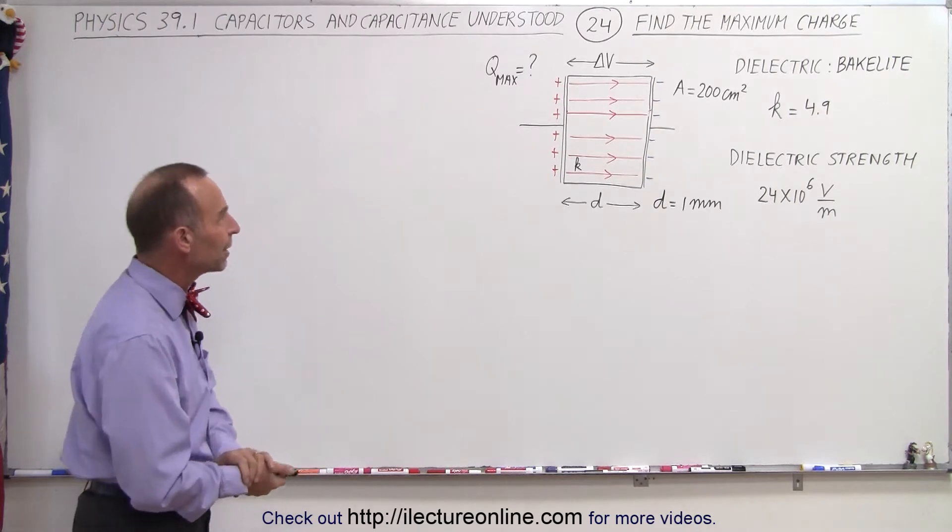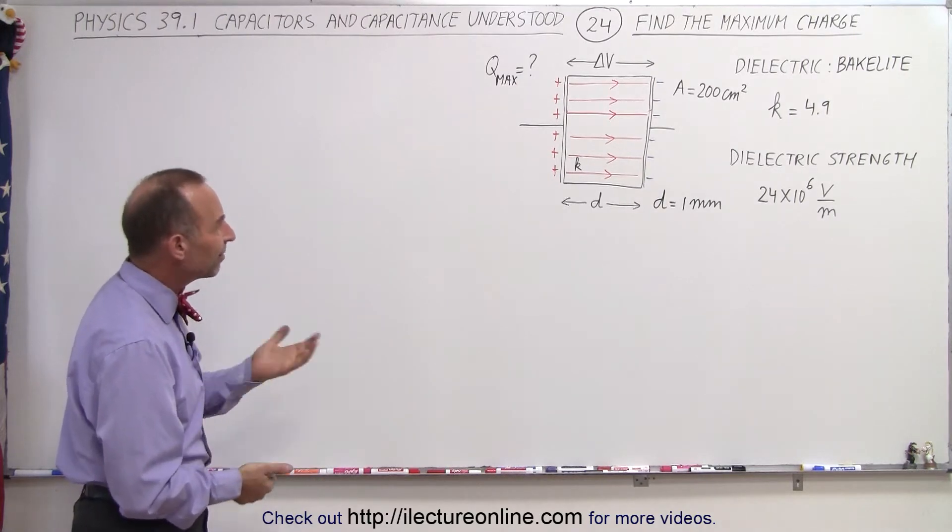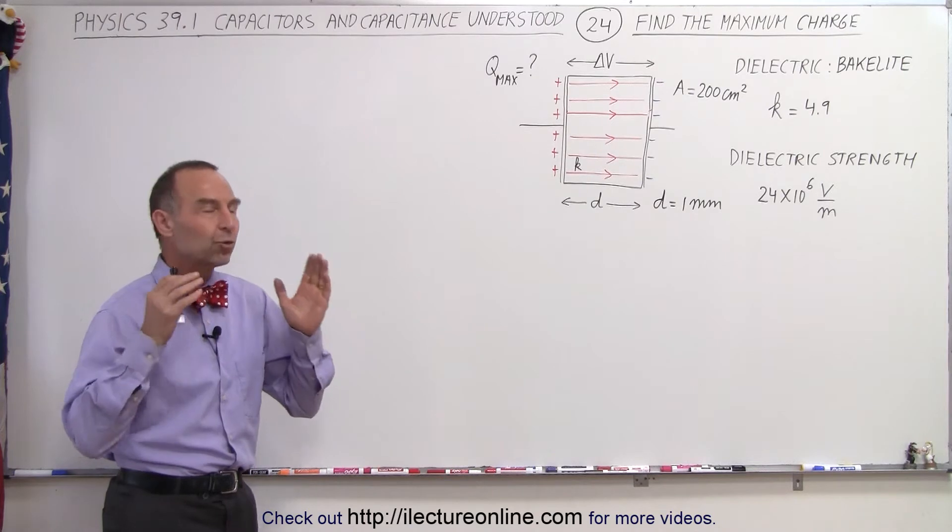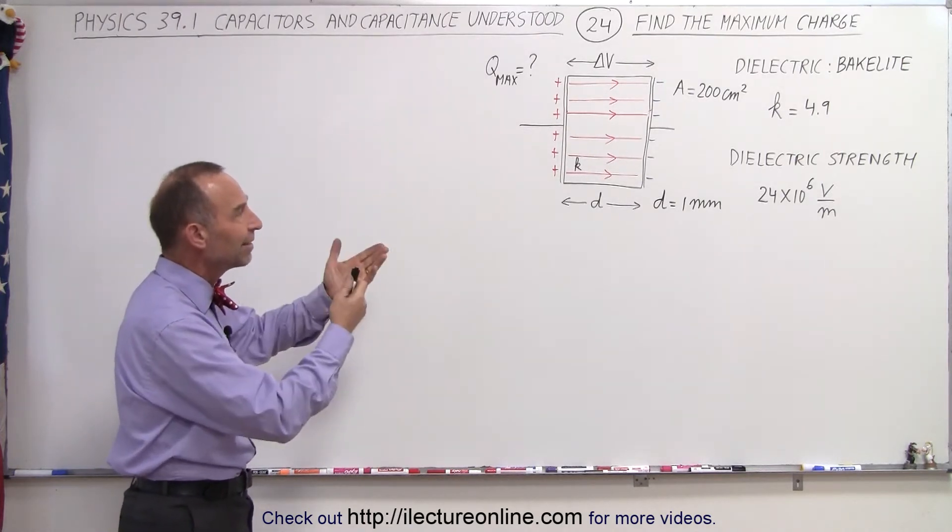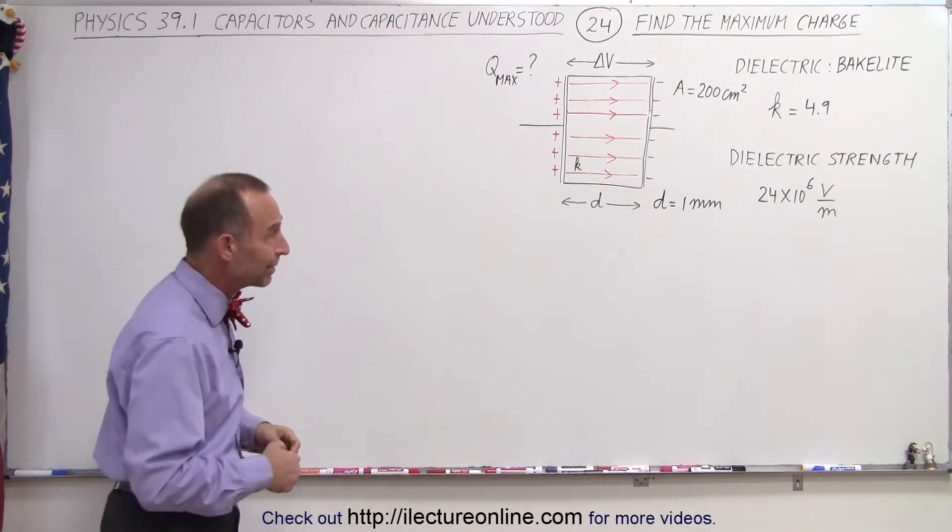That's 24 million volts per meter. But this time they want us to find the maximum charge that we're allowed to put onto the capacitor before we exceed the dielectric strength, before we have dielectric breakdown.